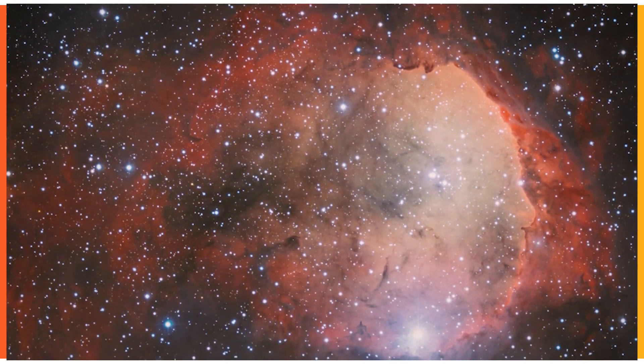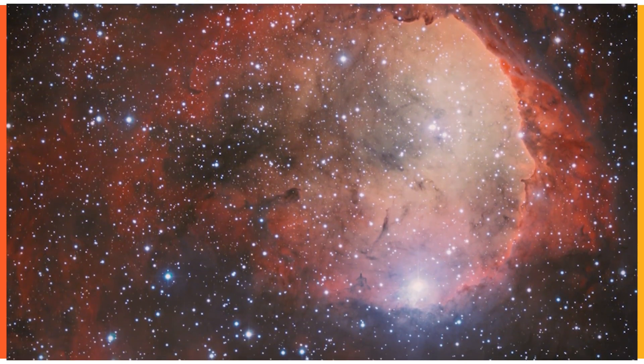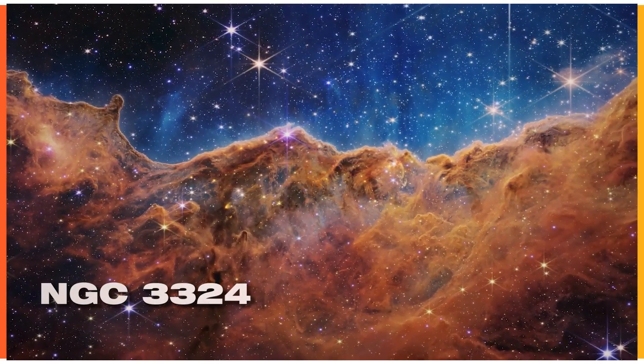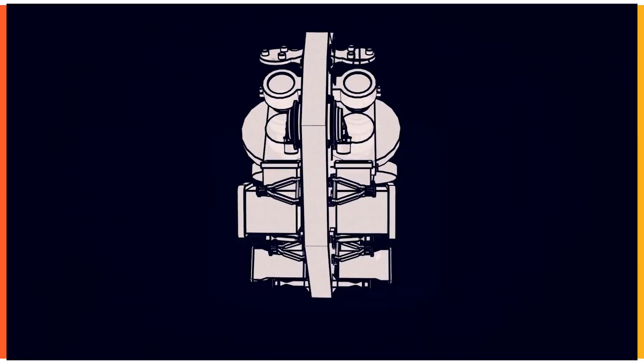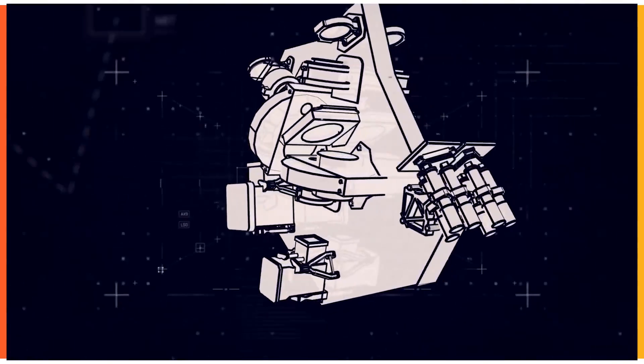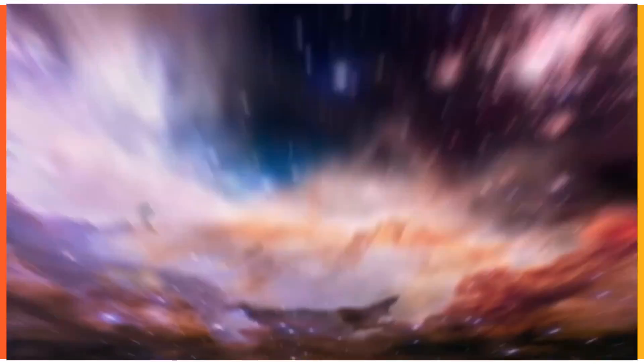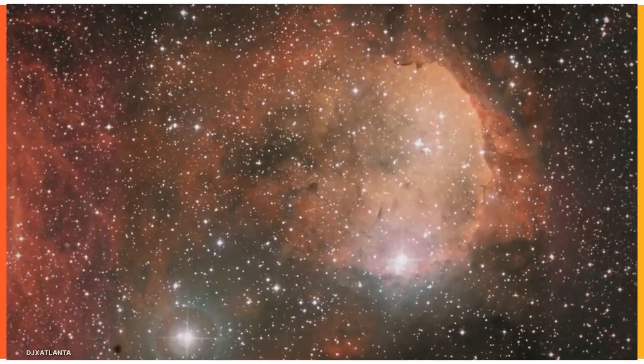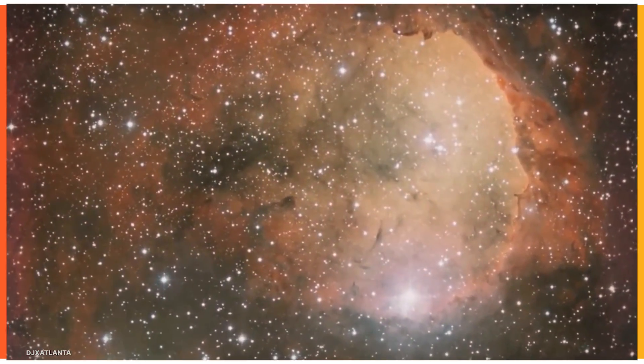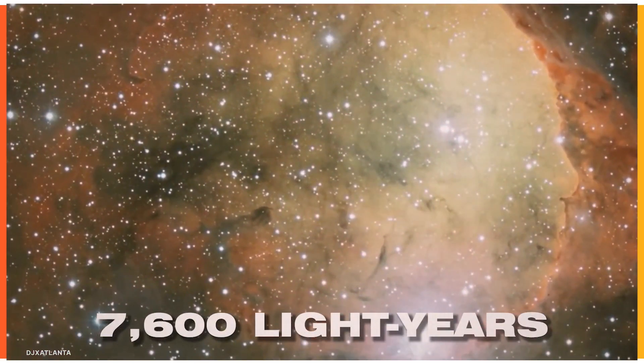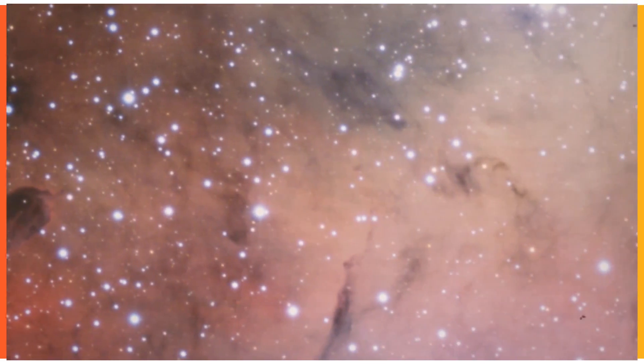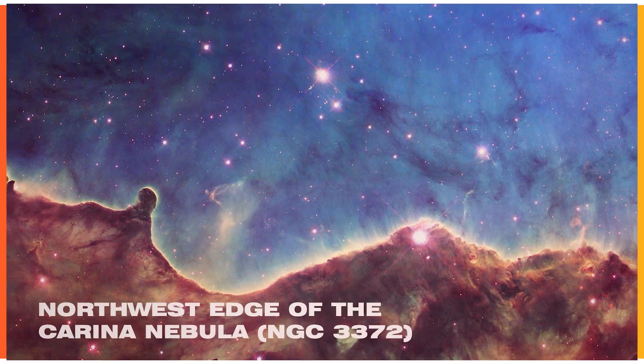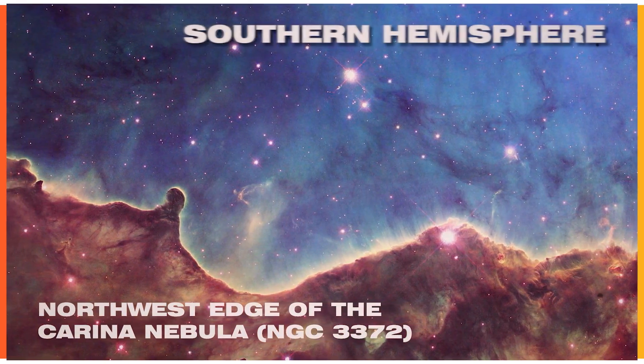What looks like craggy mountains in the night sky is actually the edge of a nearby, young star-forming region called NGC-3324 in the Carina Nebula. Captured in infrared light by JWST's Near Infrared Camera, or NERCAM, this image shows us areas of star birth that were previously never seen. NGC-3324, which is around 7,600 light years away, was originally identified by James Dunlop in 1826. It's situated in the northwest edge of the Carina Nebula, which is visible from the southern hemisphere.